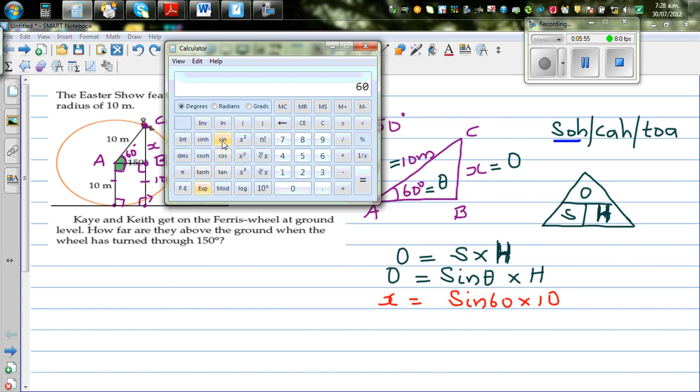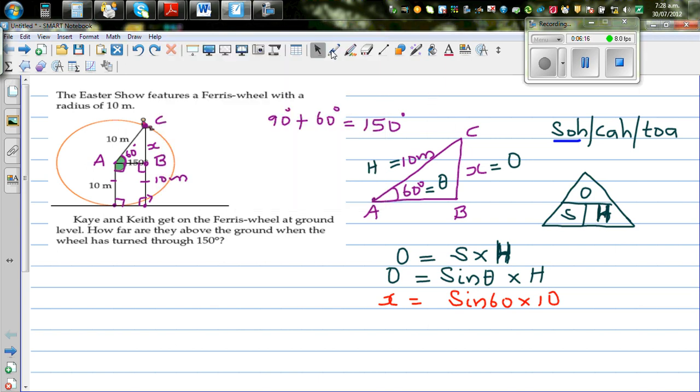This calculator will do 60 sine. Where is sine? 60 sine is this number. Times, where is the times key? This is times 60 sine or sine 60 times 10. Equal. So that is 8.66 meters. I will say this is 8.66 in 2 decimal places. So X is equal to 8.66 meters in 2 decimal places.